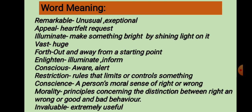Today you will practice matching and rearrange through this class. Before practicing, let us know the meaning of some words from matching and table. The first one is 'remarkable,' which means unusual, exceptional. 'Appeal' means heartfelt request. 'Illuminate' means to make something bright by shining light on it. 'Vast' means huge. 'Forth' means out and away from a starting point. 'Enlighten' means illuminate, informed. 'Conscious' means a person's moral sense of right and wrong. 'Morality' means principles concerning the distinction between right and wrong or good and bad behavior. 'Invaluable' means extremely useful.